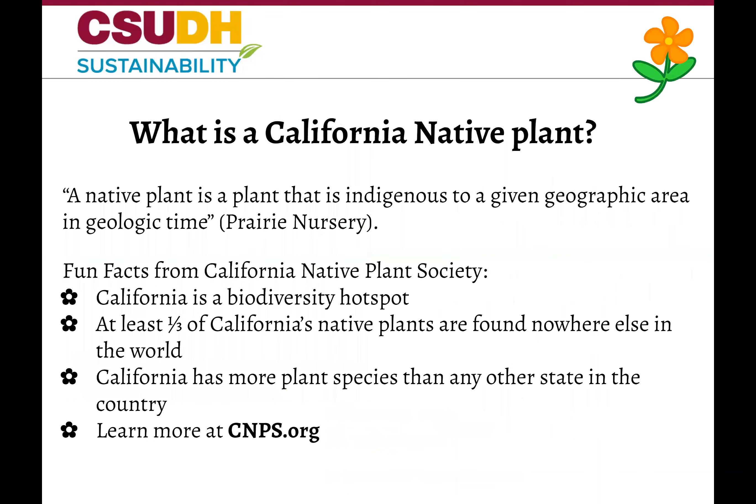So to start things off, what is a California native plant? According to Prairie Nursery, a native plant is a plant that is indigenous to a given geographic area in geologic time. So for the most part, California natives are the plants that were here before European settlement.